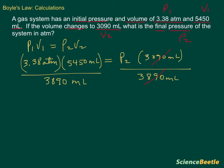Now when we have this, we've got a brand new equation on the left-hand side. So let me rewrite this equation so it's a little bit less cluttered. And so what we've got is 3.38 atmospheres multiplied by 5450 milliliters divided by the 3890 milliliters. And this is going to be equal to P2.